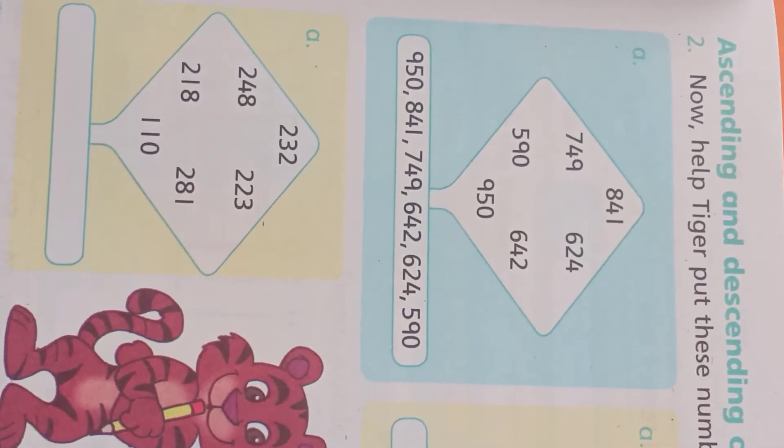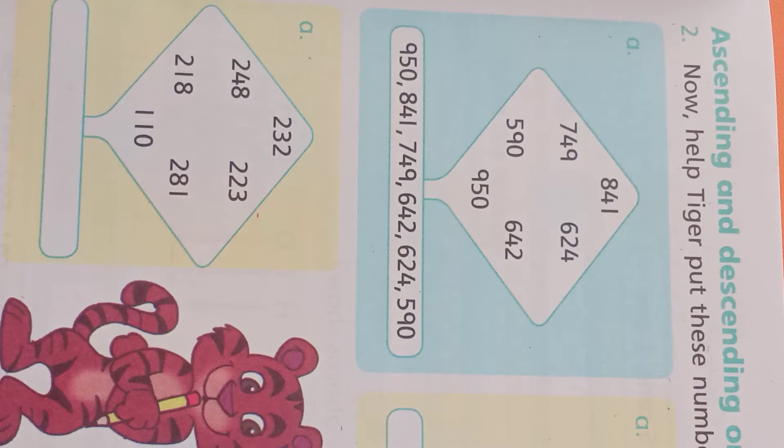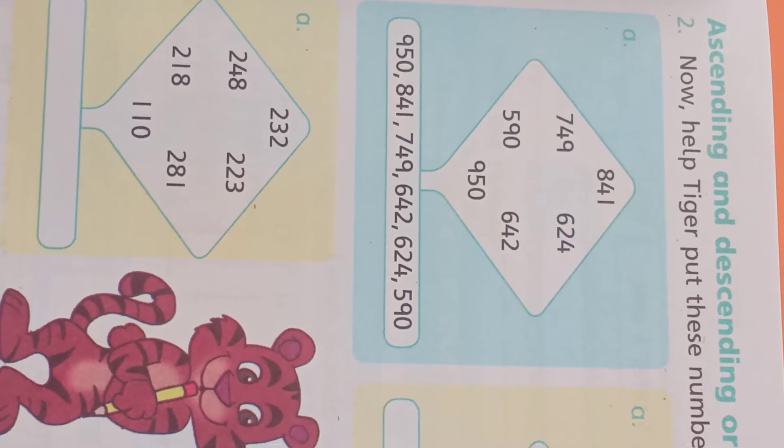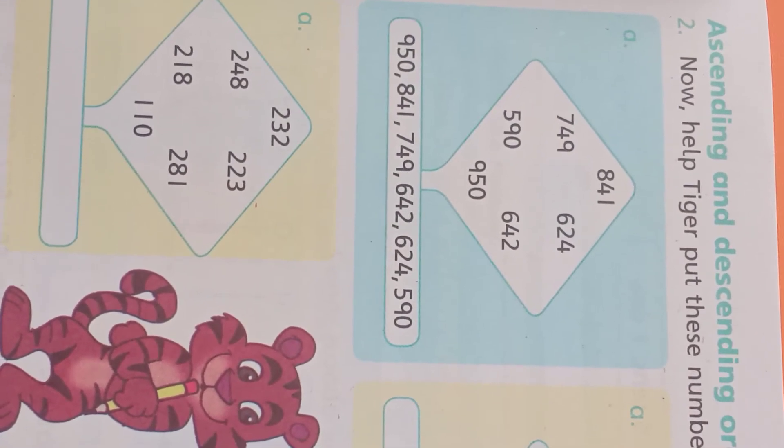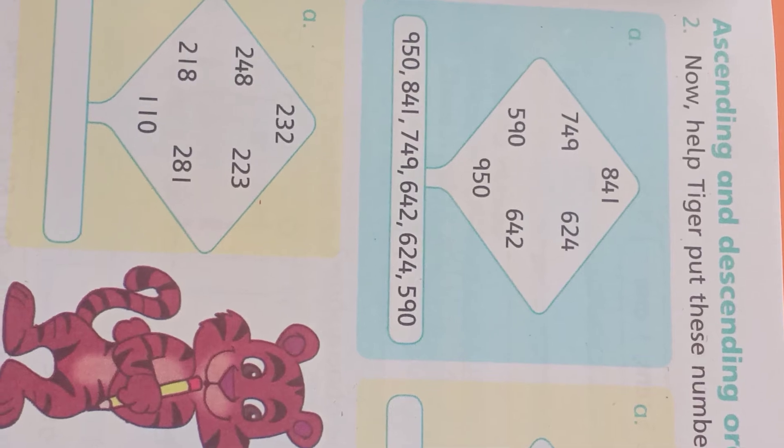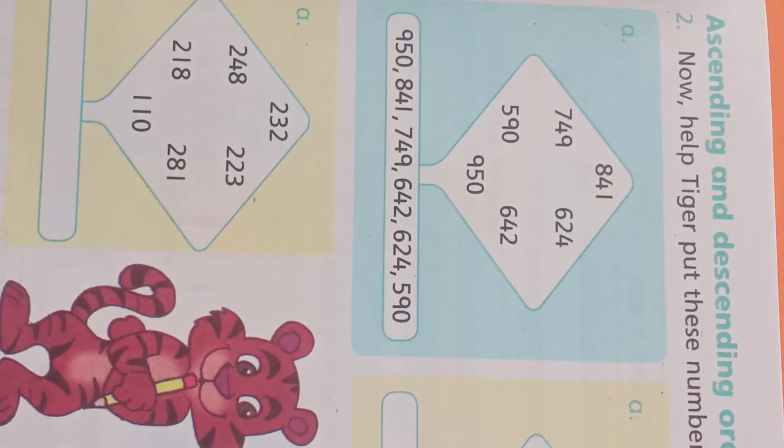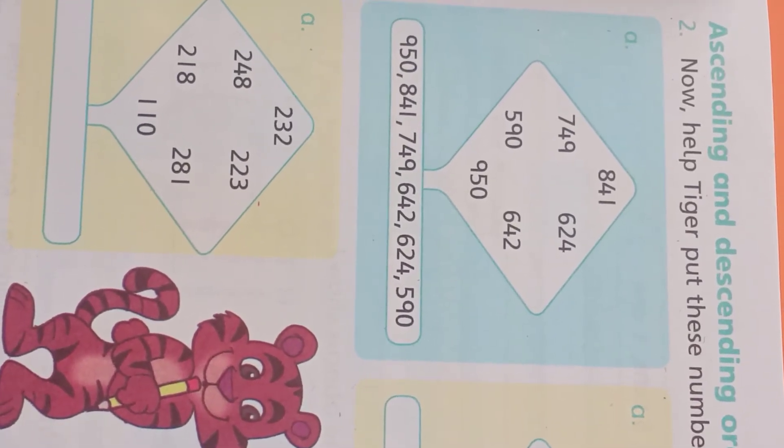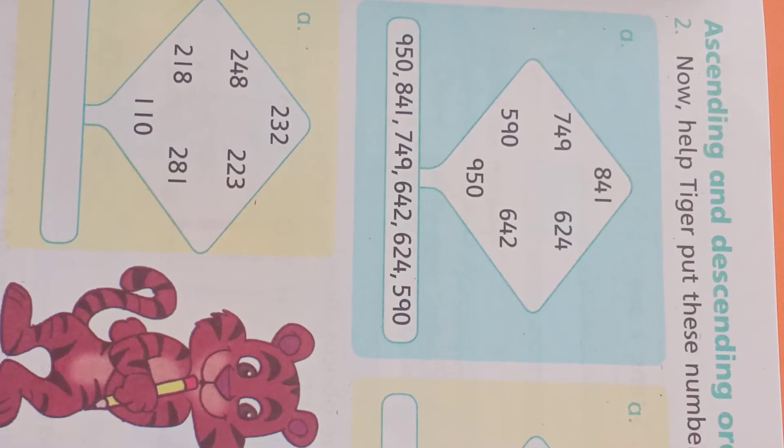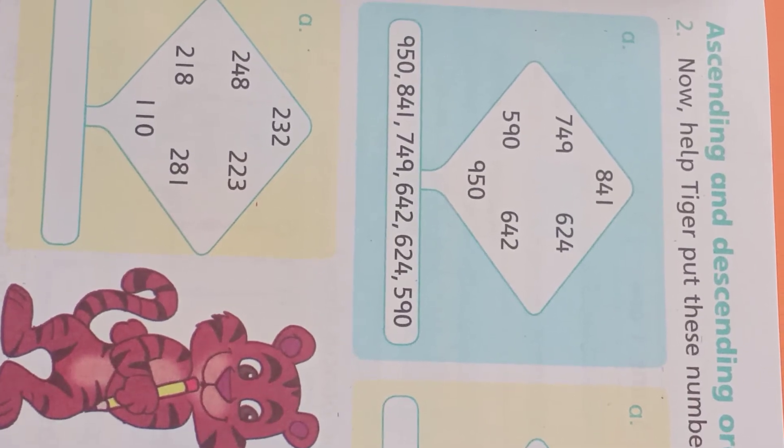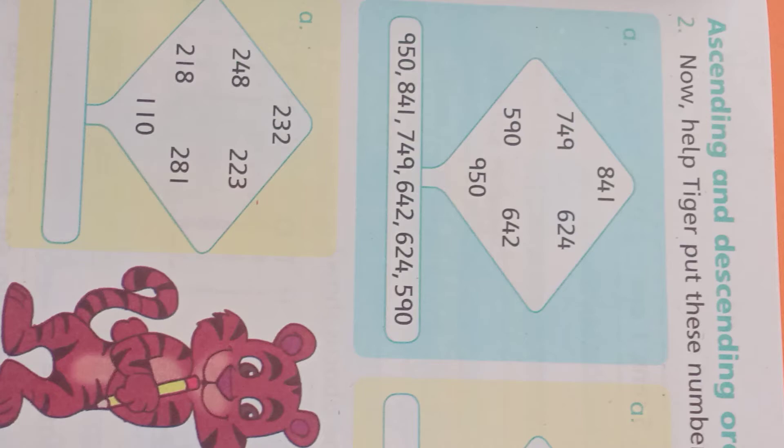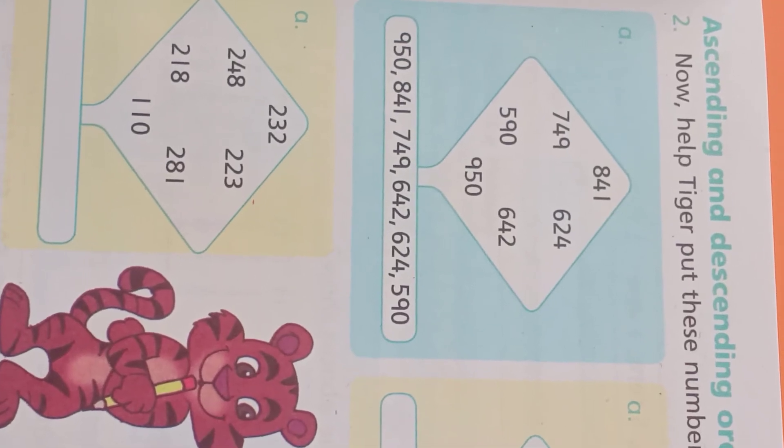When we go backwards, 10, 9, 8, 7, 6, 5, 4, 3, 2, and 1. We go up to down. We go up to small number. This is our order, descending order. It means descending order.